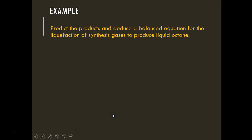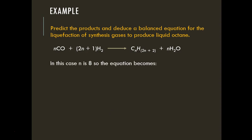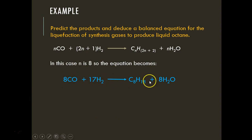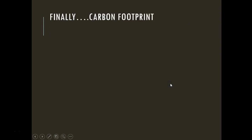Here's an example: predict the products and write a balanced equation for the liquefaction of synthesis gas to produce liquid octane. The reactants are CO and H₂, and the products are octane and water. With n = 8, the equation becomes: 8 CO + 17 H₂ → C₈H₁₈ + 8 H₂O.